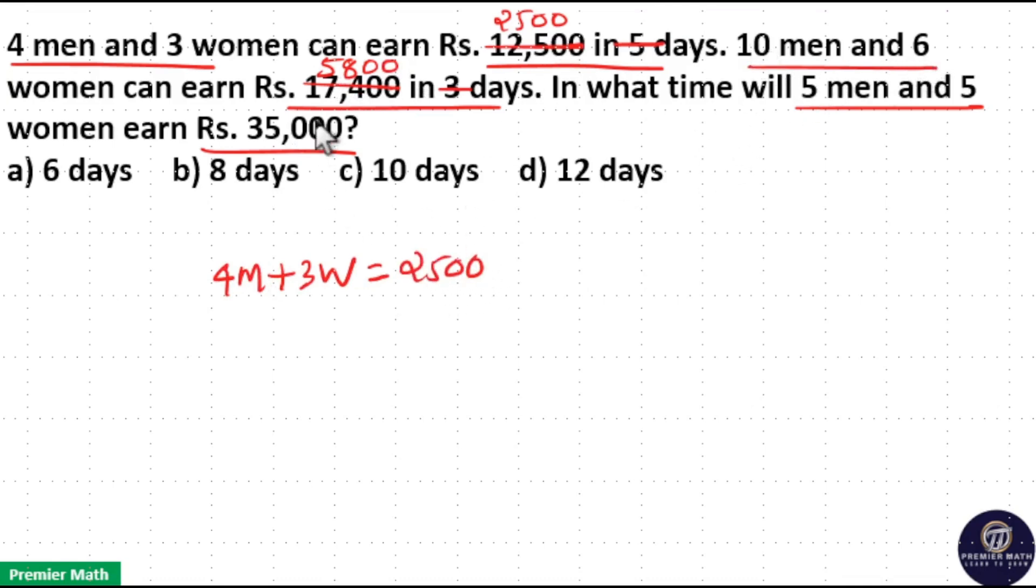So 4 men and 3 women can earn $2,500 in 1 day. And 10 men and 6 women can earn $5,800 in 1 day means take the half of it. That is 5 men and 3 women can earn $2,900 in 1 day.